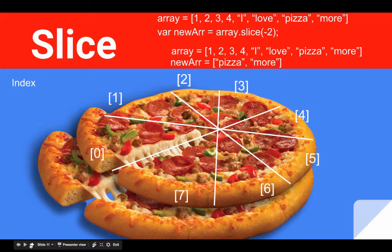Now remember, what we're left with here is not merely one new array, but the original array with all of the original elements: one, two, three, four, I love pizza more. And our new array that contains the items that we have copied a portion of from the original array. And in this case, pizza and more.